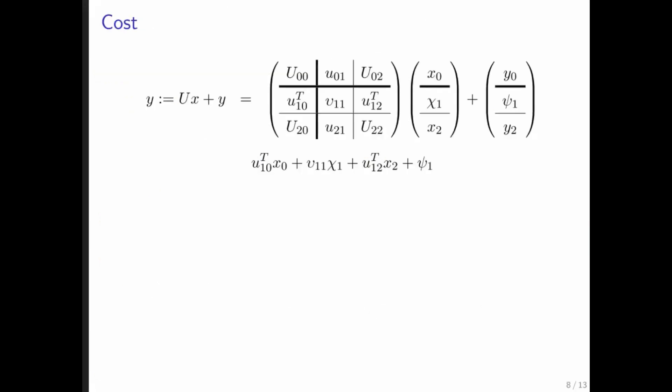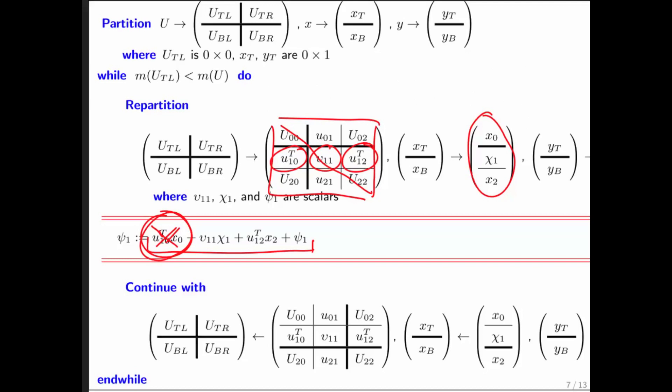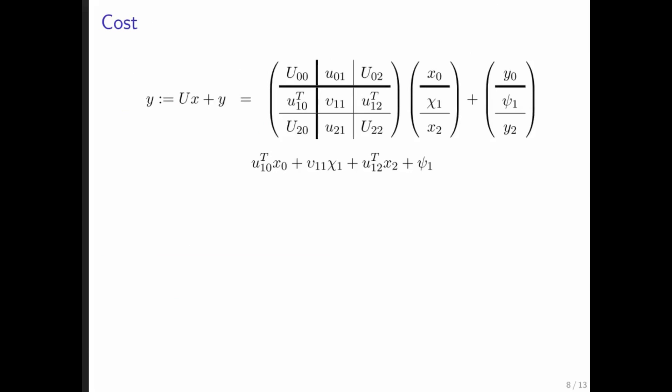What does this mean about the cost? Let's have a look here and clean it up just a little bit. Notice that the algorithm marches through matrix U, expanding the size of this top left quadrant, so that at the current iteration we can say that this submatrix is K by K. We do this for K equals 0, because initially U top left is empty, and we finish when K is equal to N minus 1, where N is the size of matrix U.